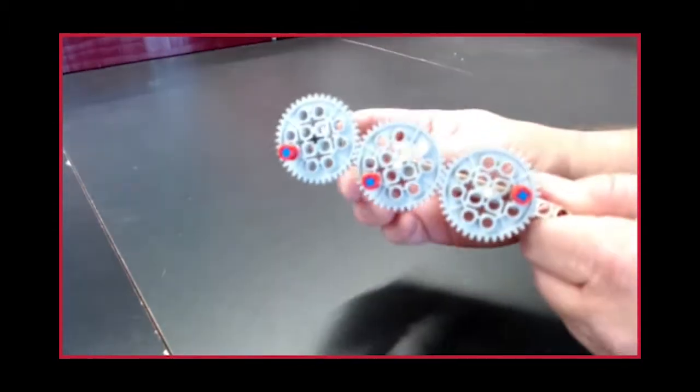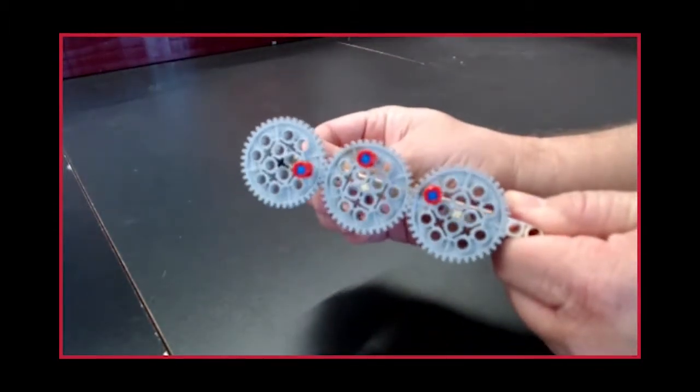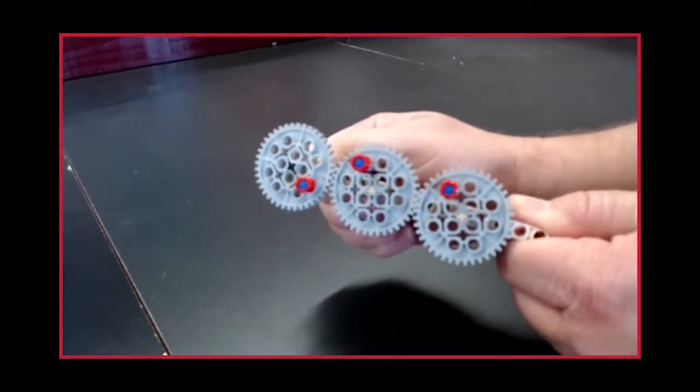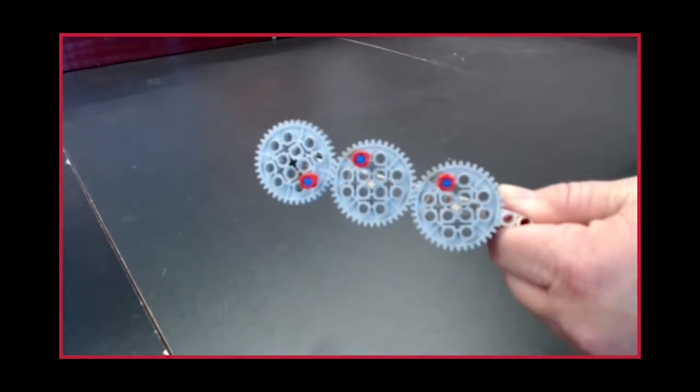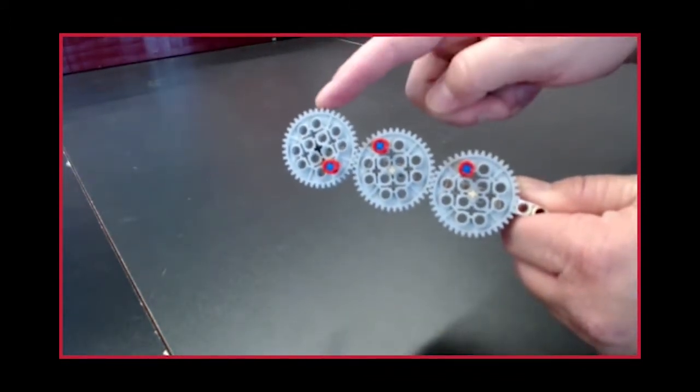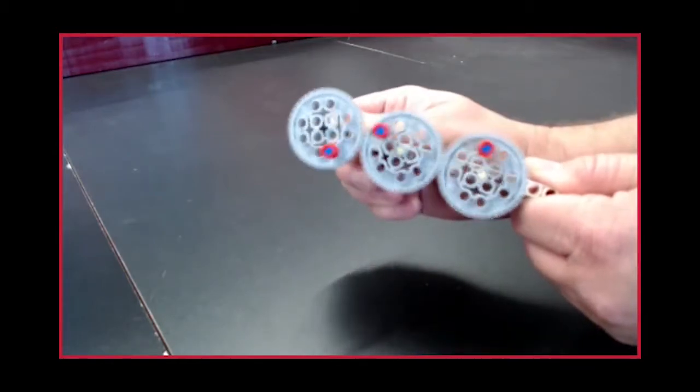You may notice as you are watching the gears spin that the gears spin in the opposite direction to the gear they are connected to. So this gear and this gear are spinning in opposite directions. But this gear and this gear are spinning in the exact same direction again.